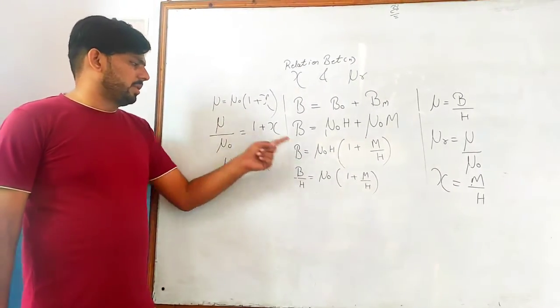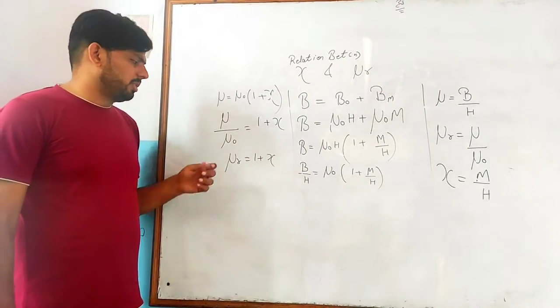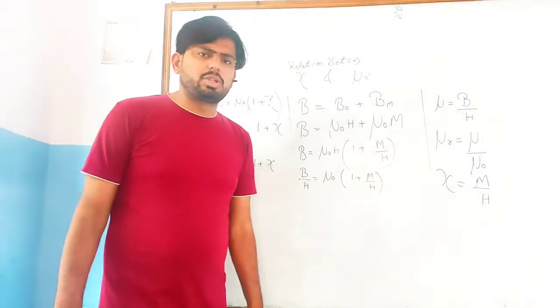Mu not - what is this? Mu upon mu not - what is this? Relative permeability. Relative permeability ka formula kya - 1 plus chi.